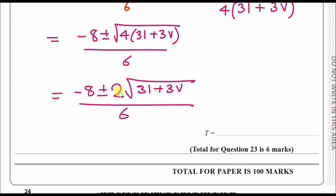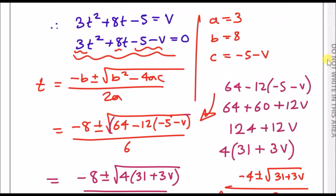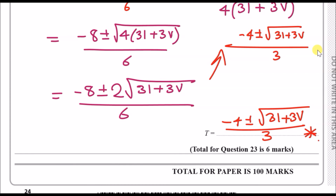On the numerator we can factorise out 2: 2(−4 ± √(31 + 3V)). Dividing by 6 and cancelling the 2 gives denominator 3. Therefore the final answer is T = (−4 ± √(31 + 3V)) / 3.